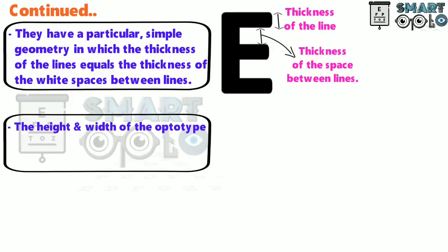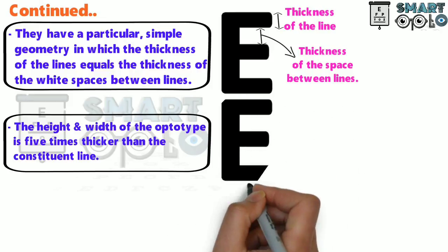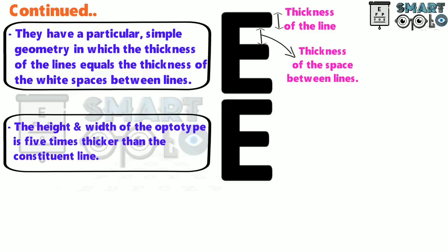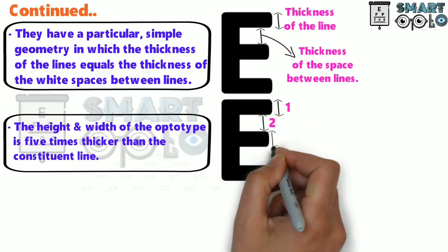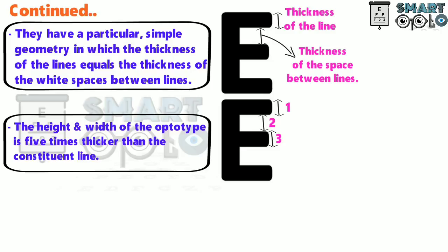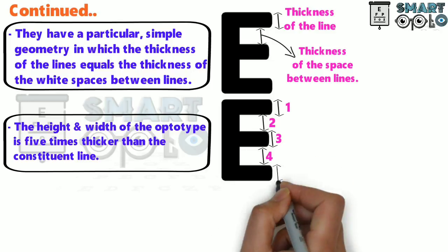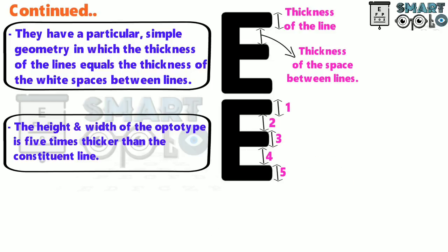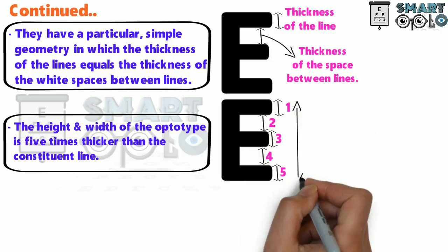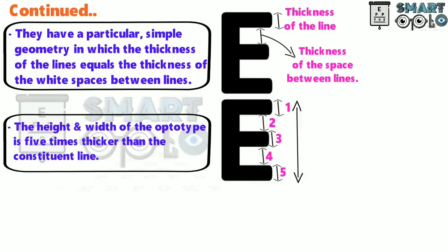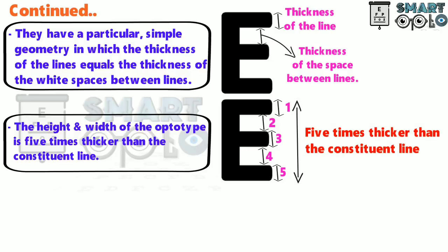The height and width of an optotype is five times thicker than a constituent line. In this figure, the constituent lines are counted one, two, three, four, and five — and this is the height of the letter, which is five times thicker than the constituent line.